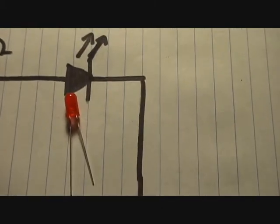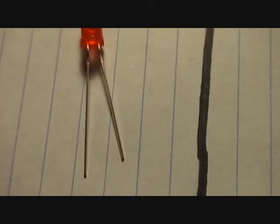In order to tell which side is positive and which side is negative, you look at the legs. One should be longer than the other. The longer one is going to be your positive leg. So that longer leg is going to be this side right here.